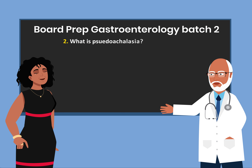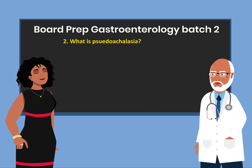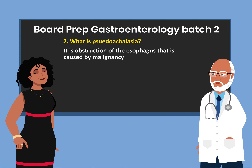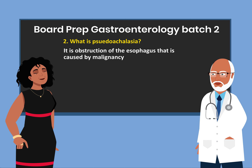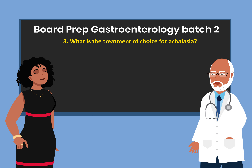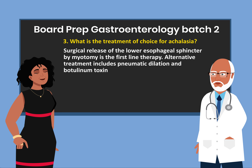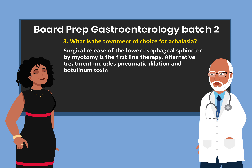Question 2: What is pseudo-achalasia? It is obstruction of the esophagus that is caused by malignancy. Question 3: What is the treatment of choice for achalasia? Surgical release of the lower esophageal sphincter by myotomy is the first-line therapy.